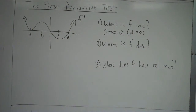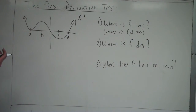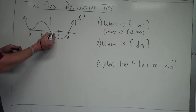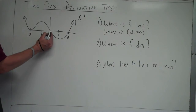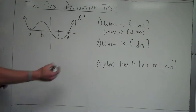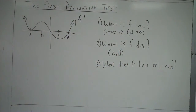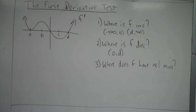Where is f decreasing? f is decreasing when f prime is negative. We're looking for where f prime is below the x-axis — where the values of f prime are negative. The values of f prime are negative when it's below the x-axis, so that would be from zero up until d. From zero to d is where f is decreasing. f is decreasing when f prime is negative — we're looking at the y-values of f prime.